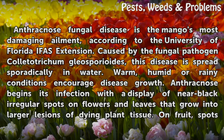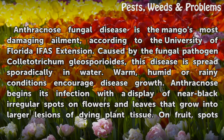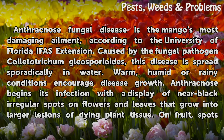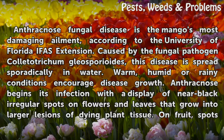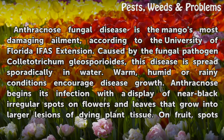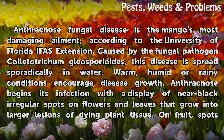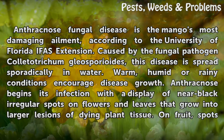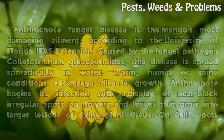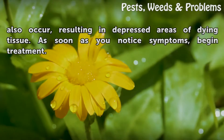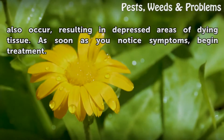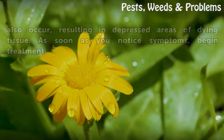Anthracnose fungal disease is the mango's most damaging ailment, according to the University of Florida IFAS Extension. Caused by the fungal pathogen Colletotrichum gloeosporioides, this disease is spread sporadically in water; warm, humid, or rainy conditions encourage disease growth. Anthracnose begins its infection with a display of near-black irregular spots on flowers and leaves that grow into larger lesions of dying plant tissue. On fruit, spots also occur, resulting in depressed areas of dying tissue. As soon as you notice symptoms, begin treatment.